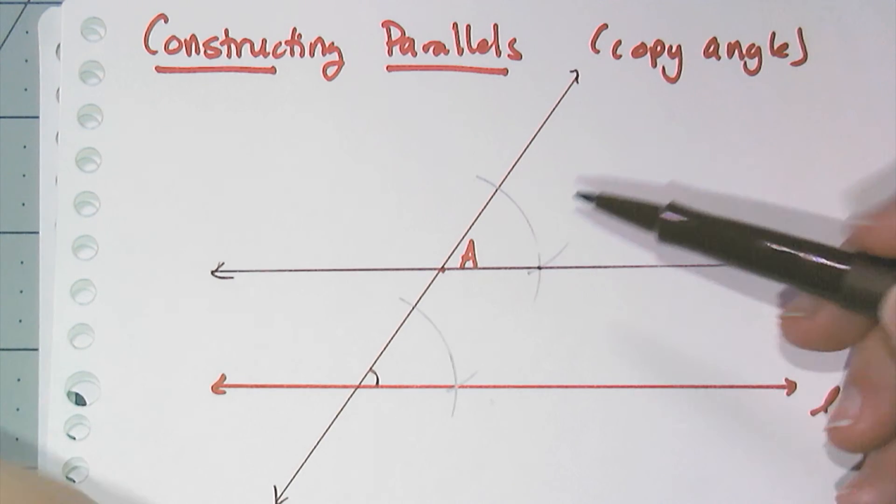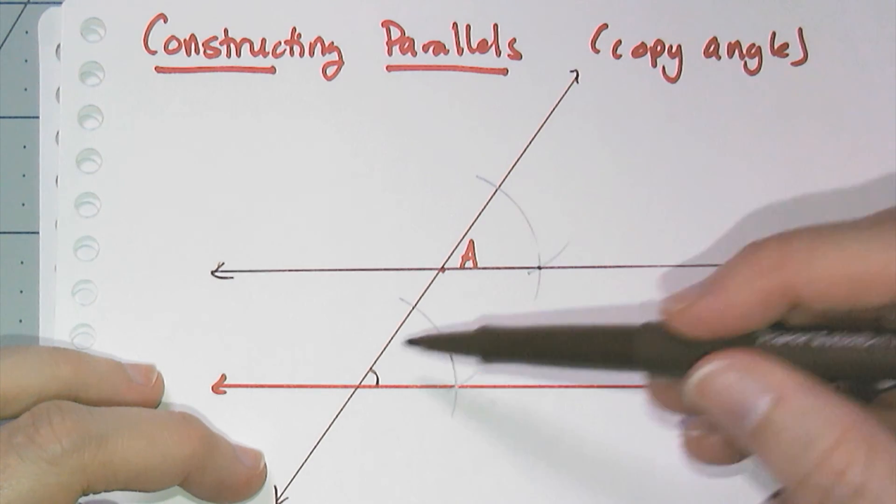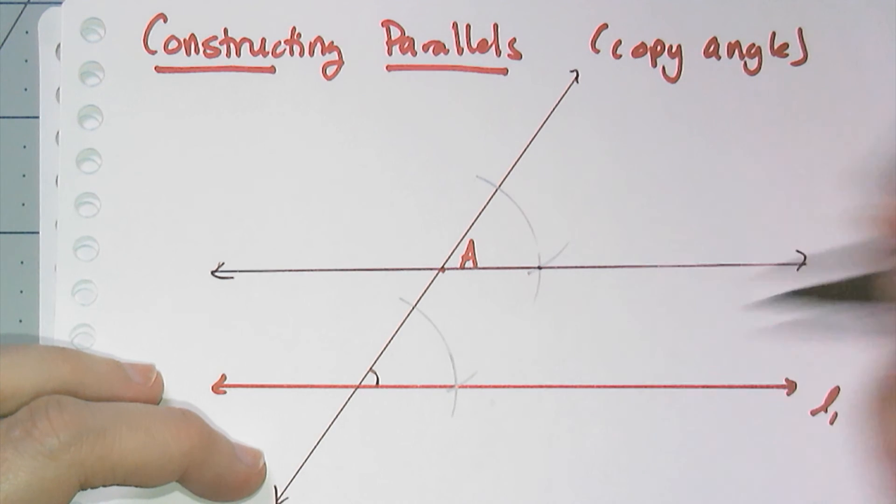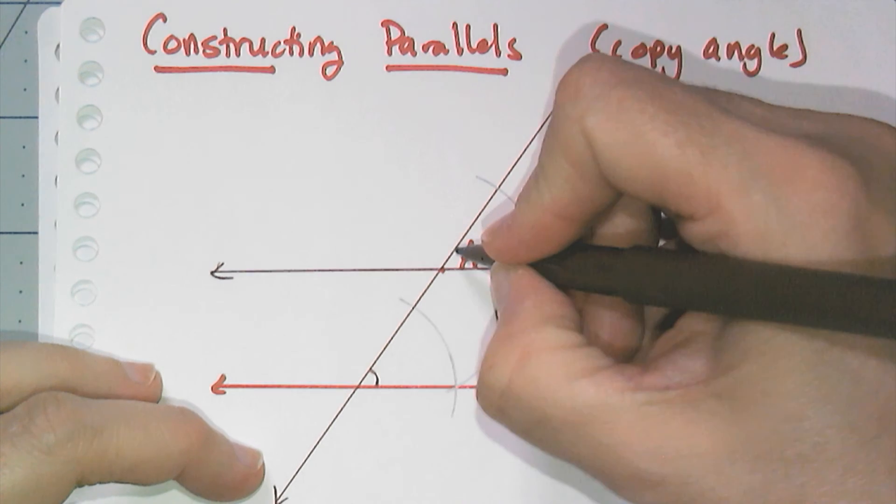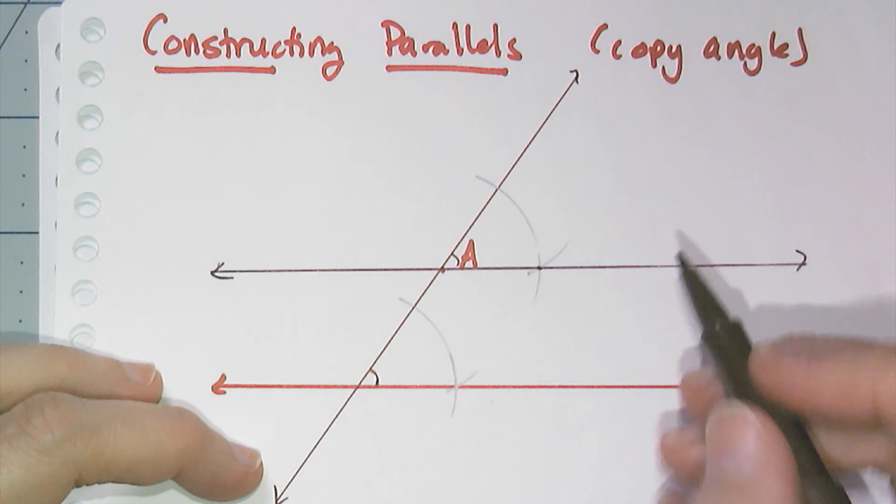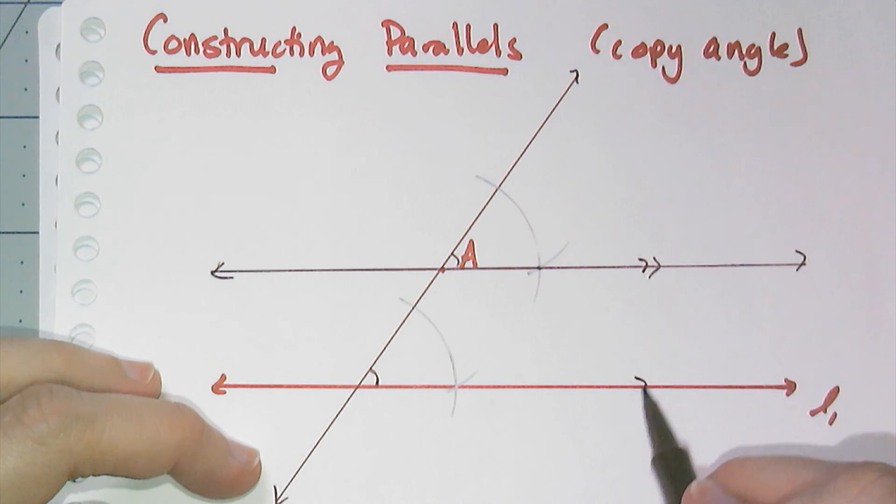Now the construction marks kind of look like congruent angle markings already. So I have those angles congruent, which means that these lines are parallel.